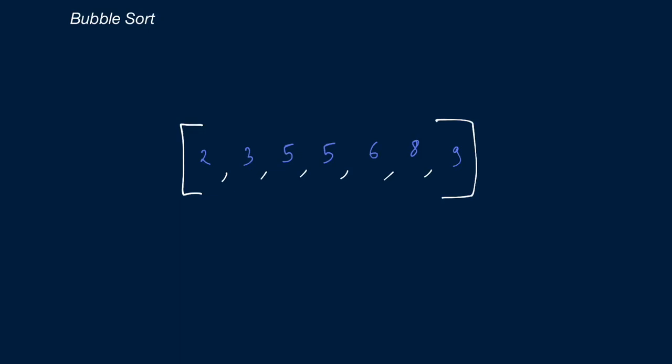So that's how bubble sort works. Before we dive into the code walkthrough, let's look at the space-time complexity analysis. In terms of space, bubble sort runs in O(1) space, because the algorithm runs in place. All our swaps were done on the input array — we didn't allocate additional memory to implement bubble sort.